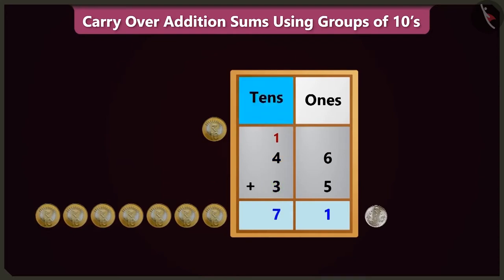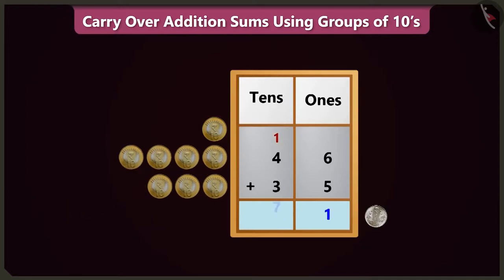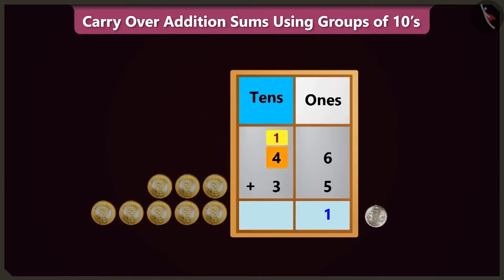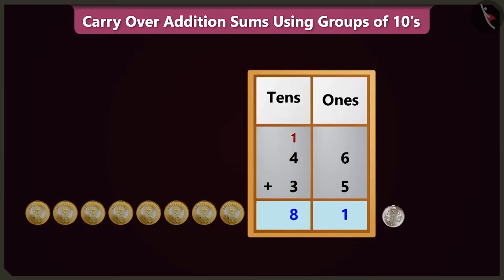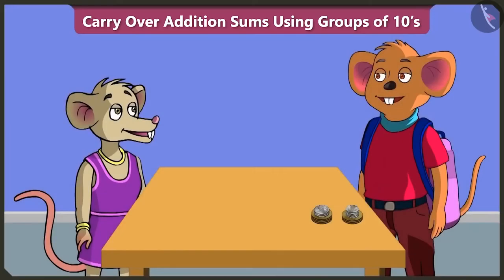Hey, Chichi, you did not count the carry over written in the 10s box. Oh, I made a mistake. Adding the carry over 1 in the 10s box to 4 makes 5 and adding 5 and 3 makes 8. Now you counted, right? The total amount is 81. Very good, Chichi. But now while doing addition, don't forget to count the carry over number as well. I will definitely remember. You also please remember this.